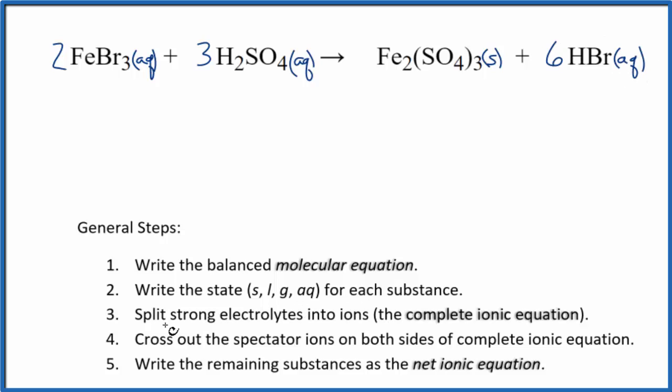Once we have these states, we'll split our strong electrolytes into ions for the complete ionic equation. So iron, we don't know the charge on iron here, but the bromide, that's always 1 minus. So this has to be 3 plus, since we have 3 of the bromides.